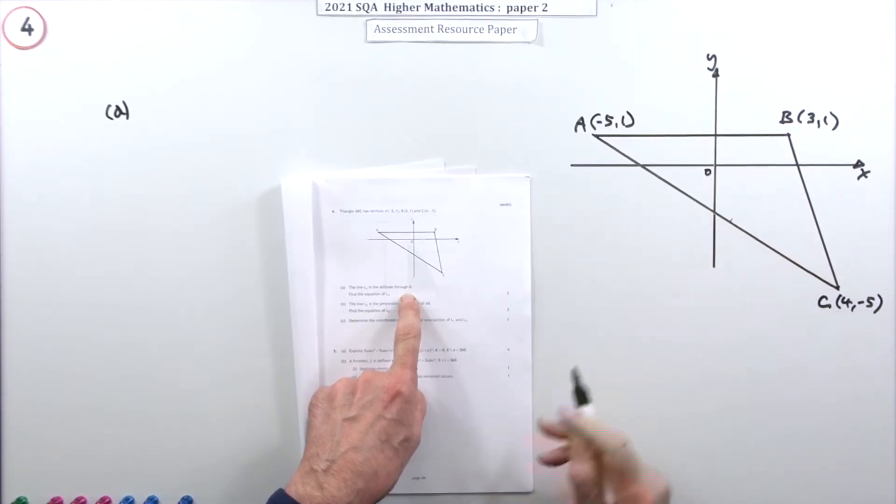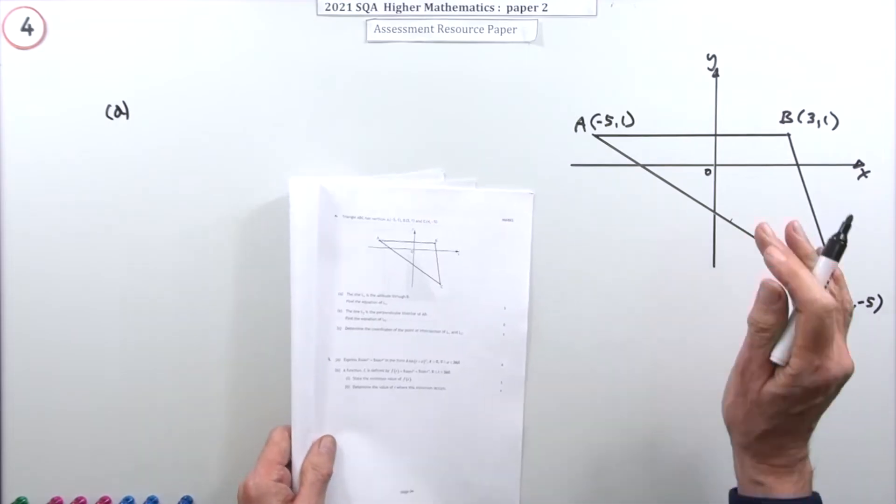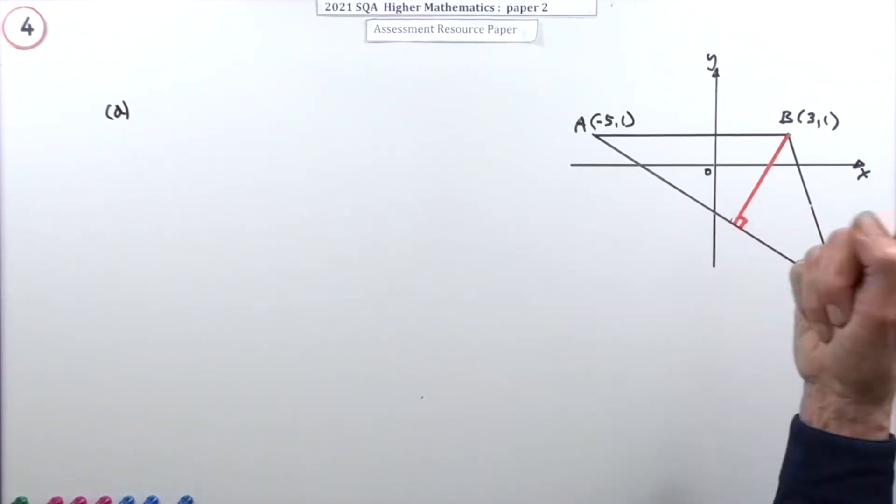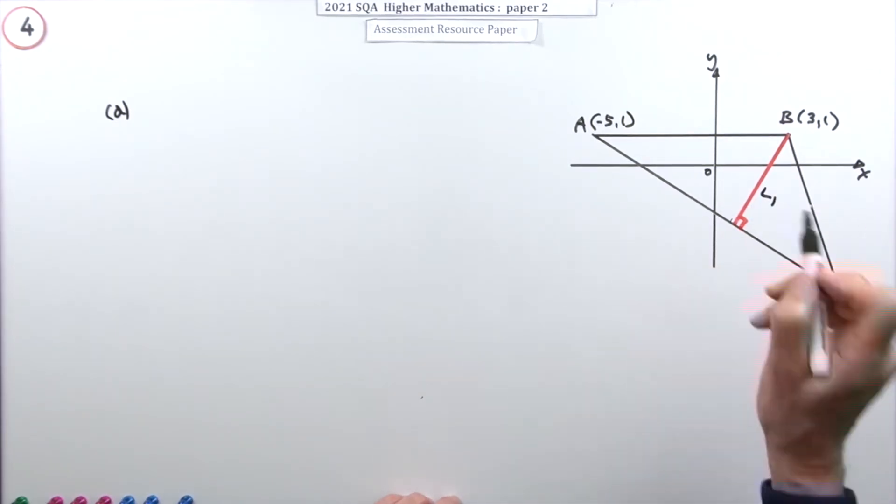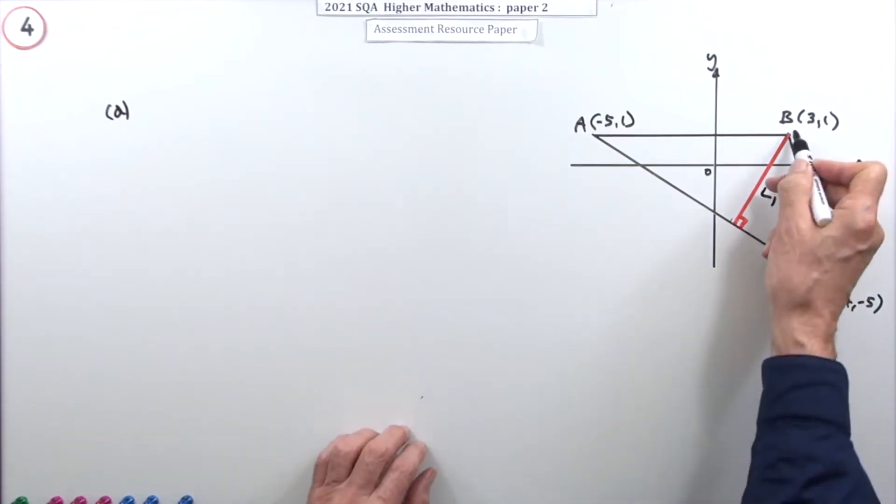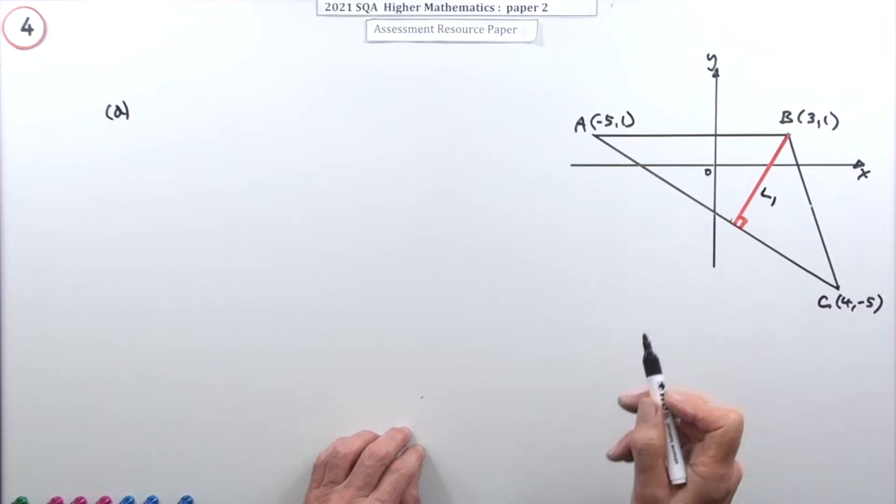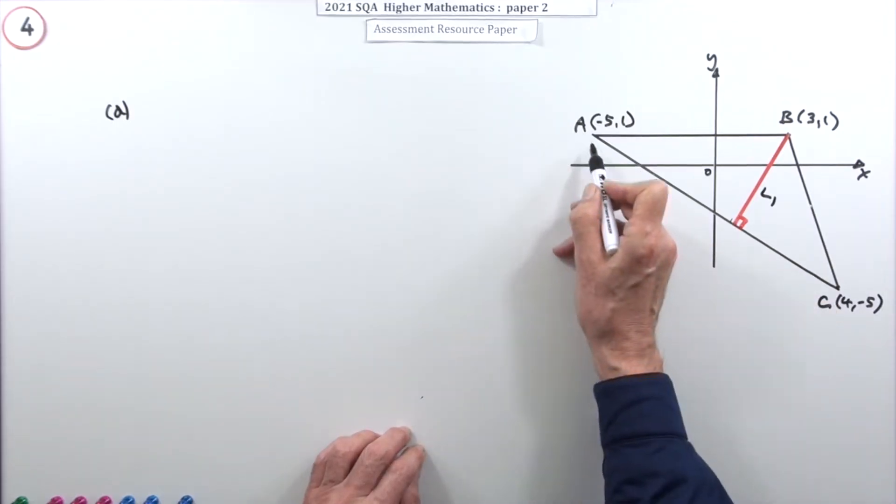Find the equation of line L1. I'll give it its name, L1. To get the equation of a line, you need two things: a point on it - well I've got that, I've got point B - and its gradient. But you can get the gradient from AC because that's related to it, it's perpendicular.